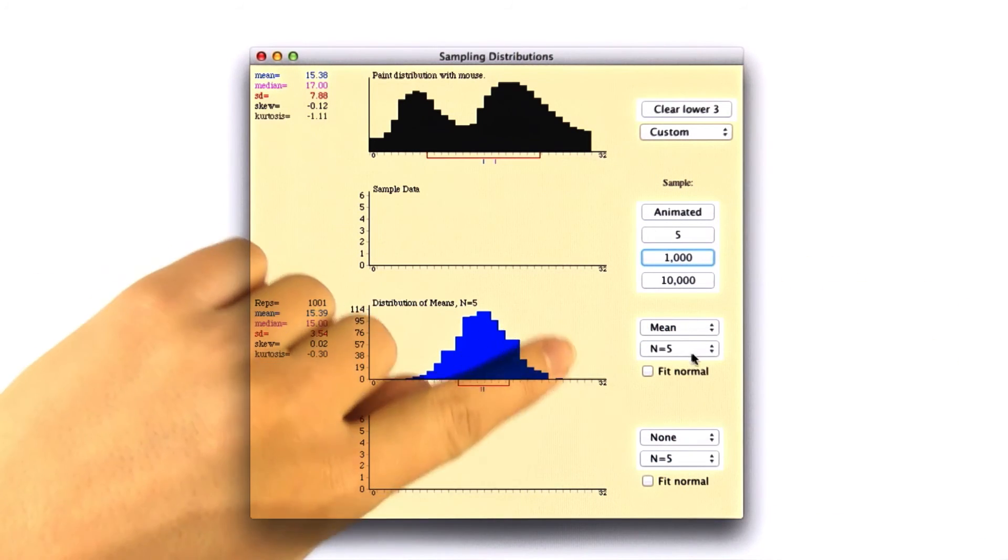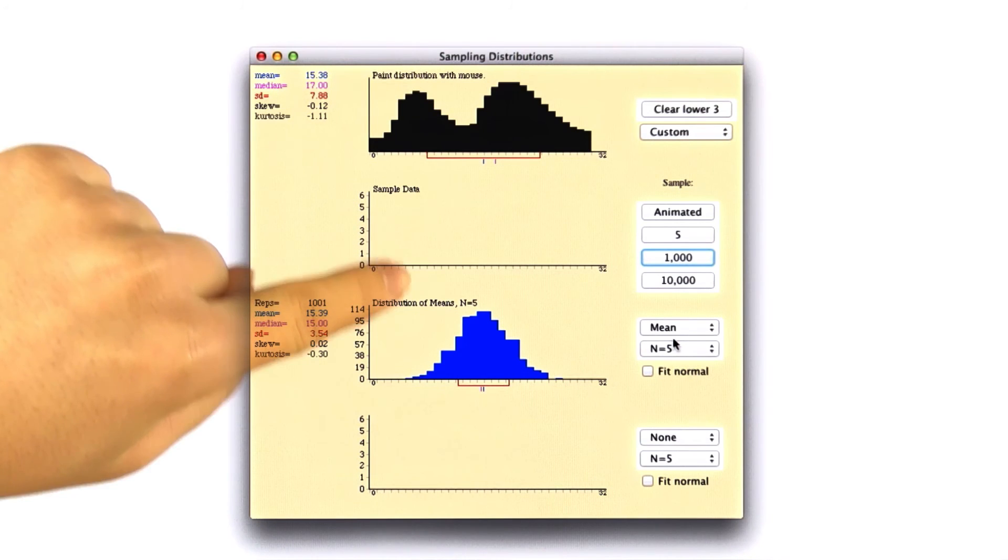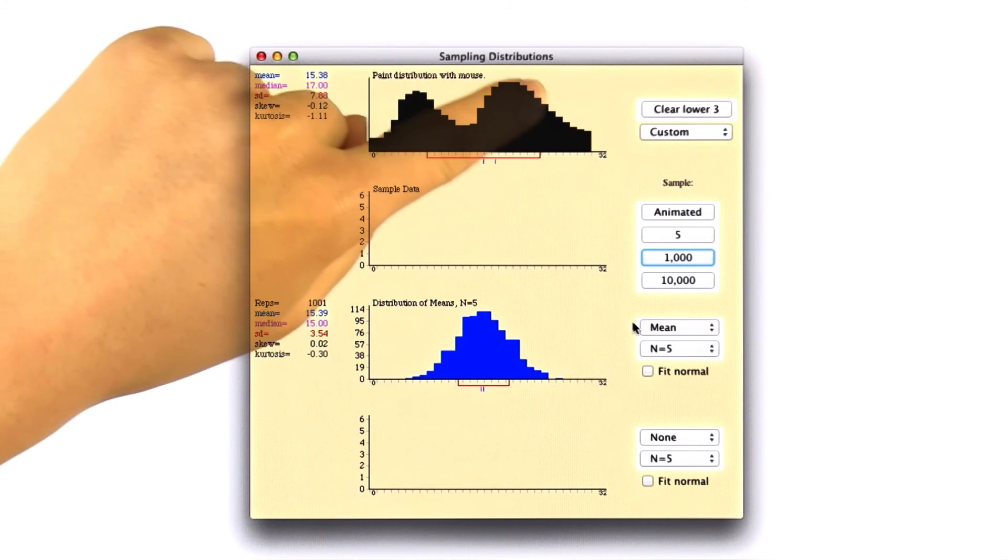Remember though, if n is 1, then the distribution of means is just going to look like the population distribution.